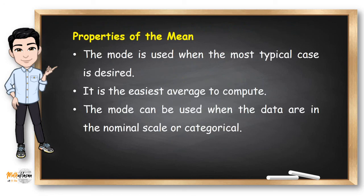The mode is used when the most typical case is desired. So if you want to rank different products by votes, the mode is the best measure. It is the easiest average to compute. And if nominal and categorical data are involved, you can use the mode instead of the median and the mean.